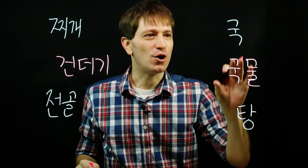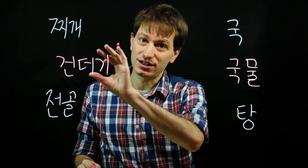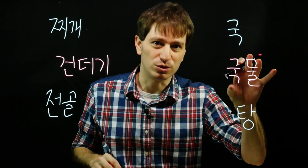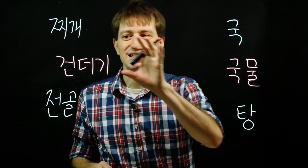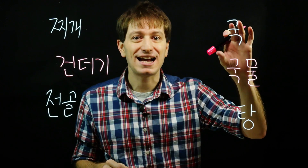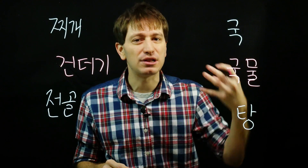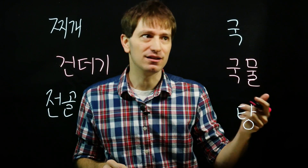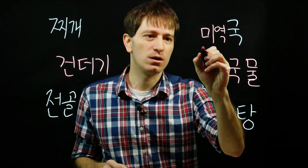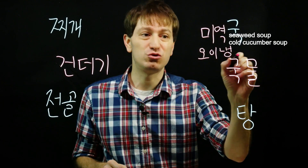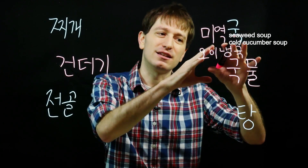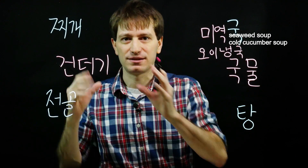국 doesn't really have very many 건더기. The point of 국 is more of the 국물 and less of the 건더기. In some cases, 국 can actually take the place of water in a meal. For example, you might have 미역국 or 오이냉국. The main point of 국 is that the focus is on the 국물, not on the 건더기.